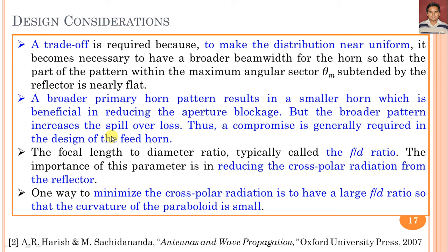The second important design consideration is the focal length to diameter ratio f/D. A larger f/D ratio reduces cross-polar radiation from the reflector because the curvature of the paraboloid is smaller. These two factors — the feed horn design and the f/D ratio — are the most important considerations required for designing reflector antennas.